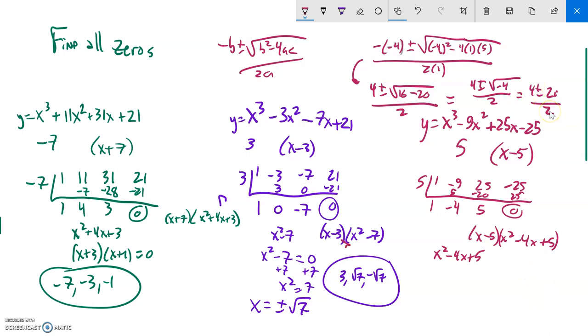So four divided by two is two. Two i divided by two is just i. So there's my, for when that's equal to zero, there's my solutions. Notice they're imaginary solutions.